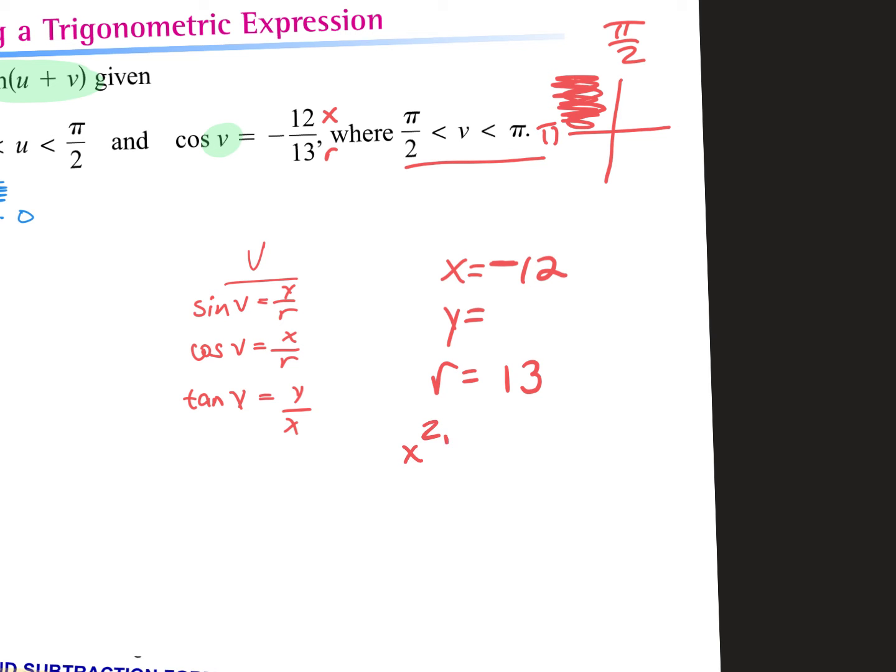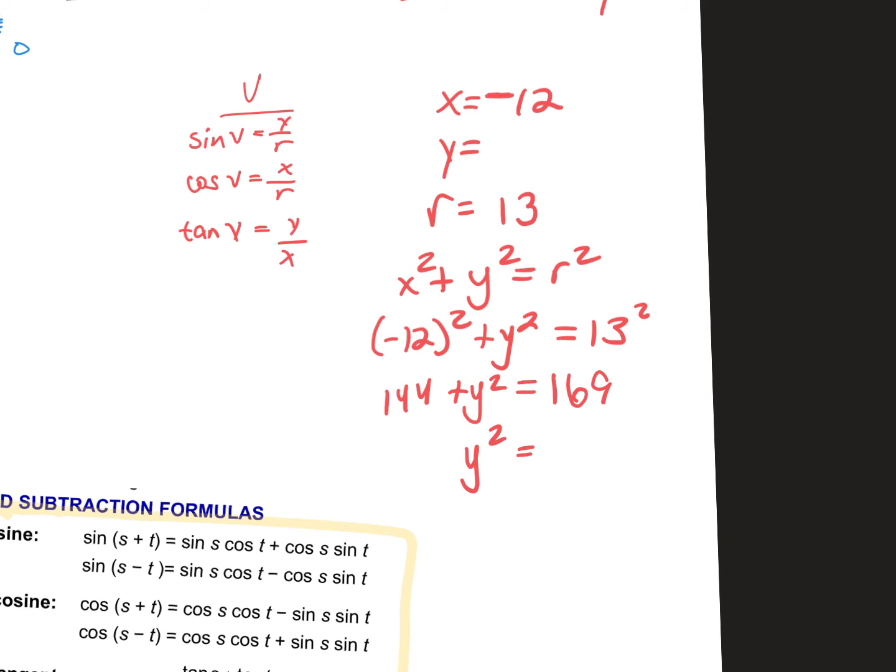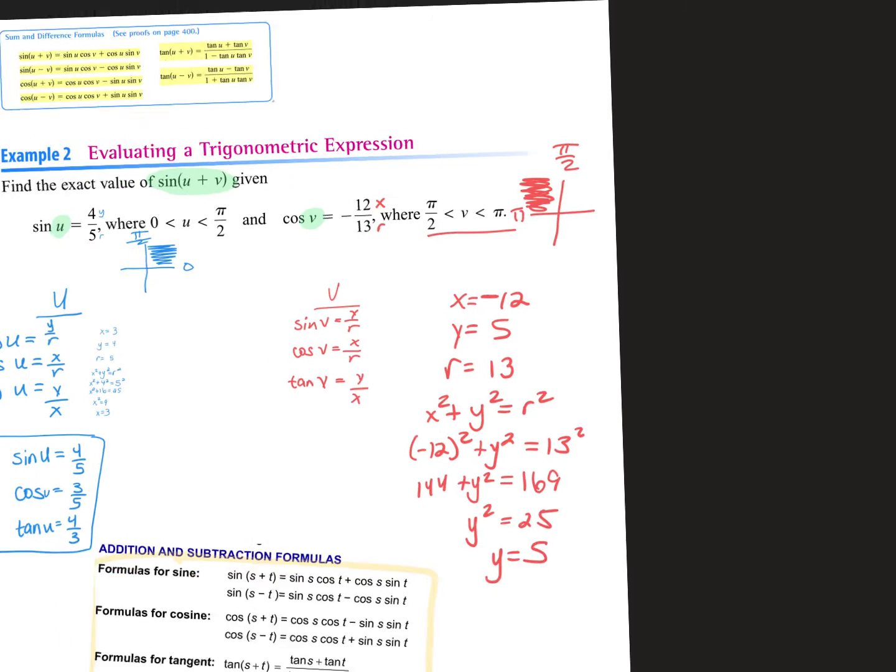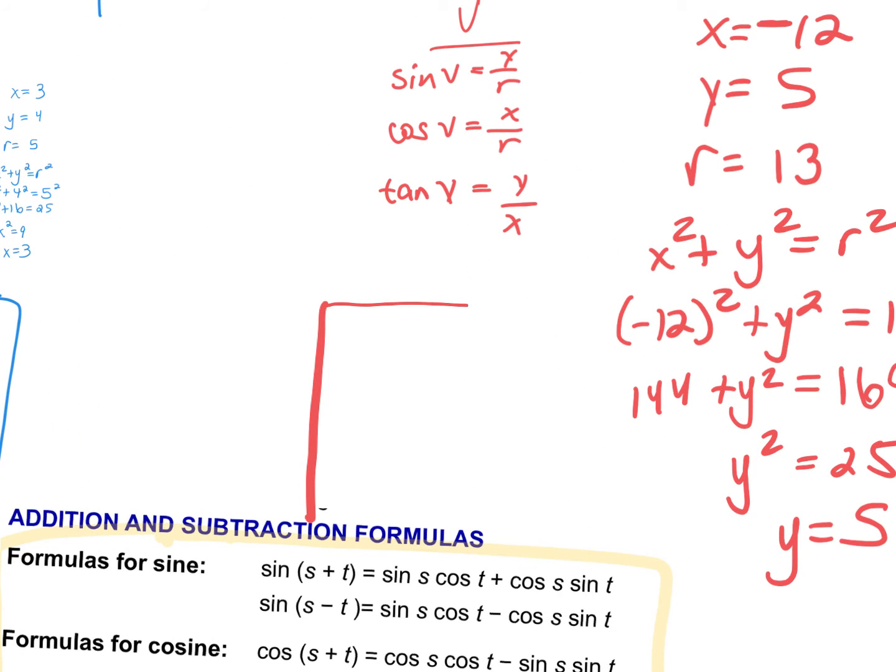So now we use Pythagorean theorem. X squared plus Y squared equals R squared. So I get negative 12 squared plus Y squared equals 13 squared. 144 plus Y squared equals 169. So Y squared equals 25. Y equals 5. That's enough information, but I'm telling you right now, the best thing you can do is to write down that other information.